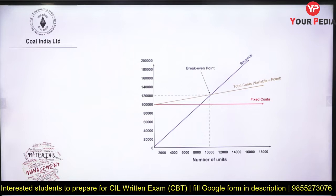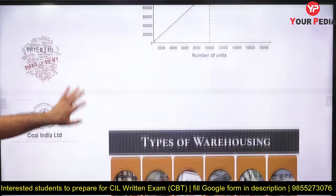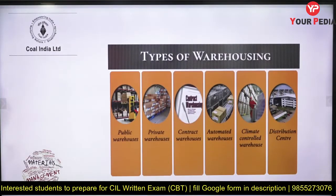Break-even point is an important topic. It is the point where there is neither profit nor loss, and it helps you choose an effective way of production. At break-even, total cost equals total revenue. Total cost is made up of fixed cost plus variable cost.